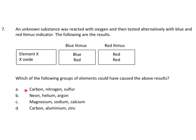So which of the following groups of elements could have caused the above results? Carbon, nitrogen, sulfur — they are all non-metals, so that is likely to be the answer. Neon, helium, argon are all noble gases; they don't form oxides whatsoever, so it can't be that. Magnesium, sodium, calcium are all metals, and metals form basic oxides, so it can't be that either.